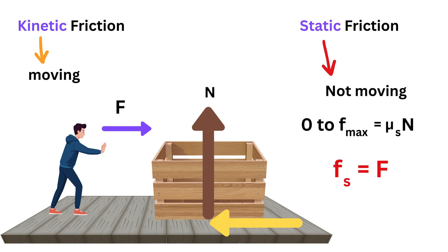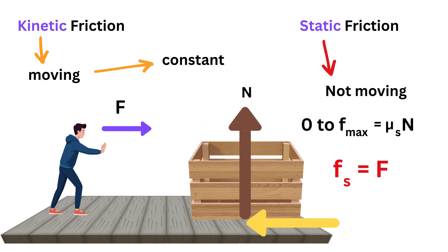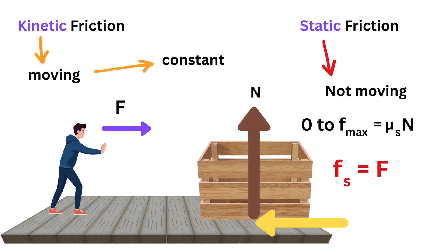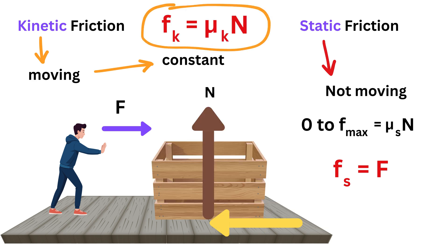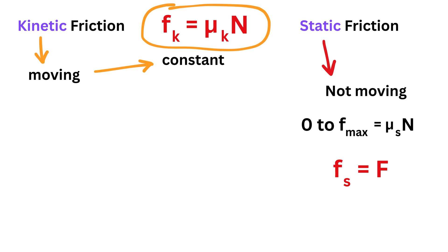Finally, kinetic friction happens when the object is already moving. Once sliding begins, the friction force becomes constant and is determined by multiplying the coefficient of kinetic friction mu_k with the normal force n. Kinetic friction always acts opposite to the direction of motion, trying to slow the object down.